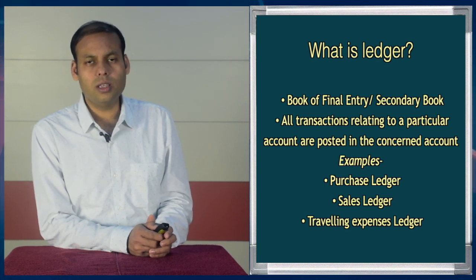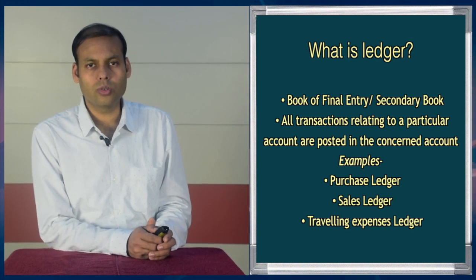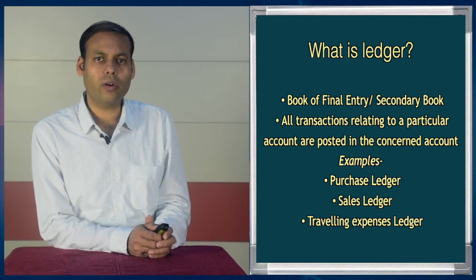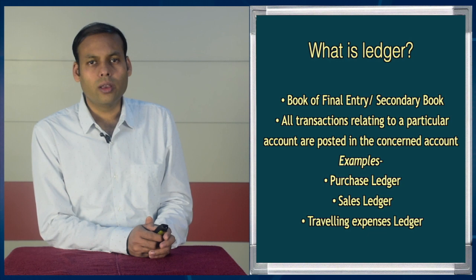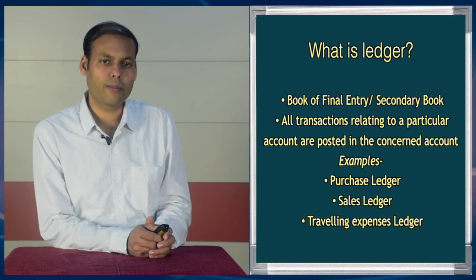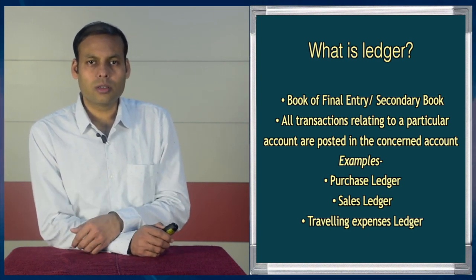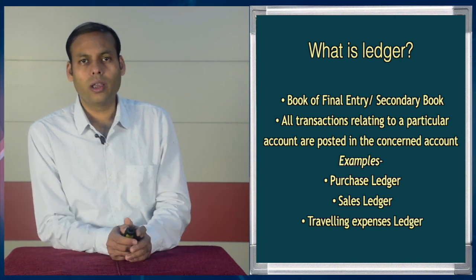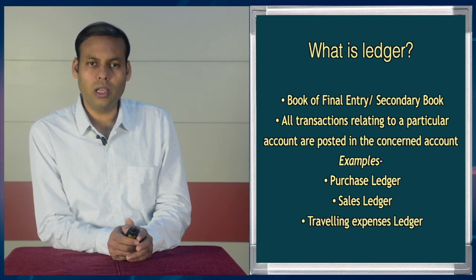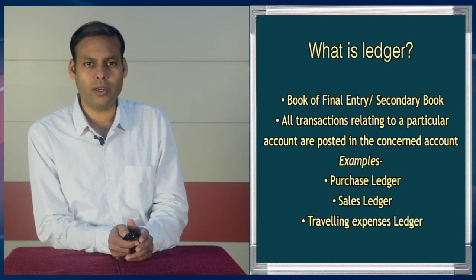This ledger book is the collection of different accounts. After entering the transactions in the journal, we post them in the ledger book. So the ledger will have different types of accounts — it may contain purchase account, sales account, salary account, wage account, etc. All transactions from the journal are recorded in the particular account in the ledger book. That is why the ledger is known as the book of final entry.